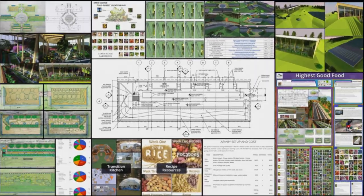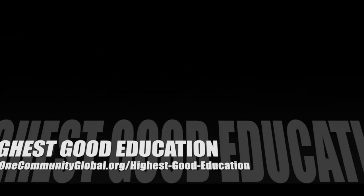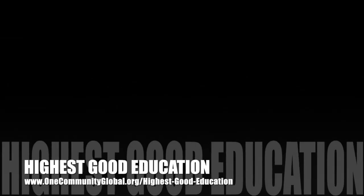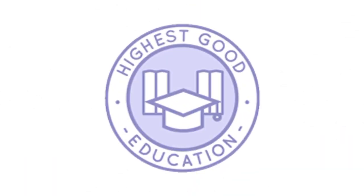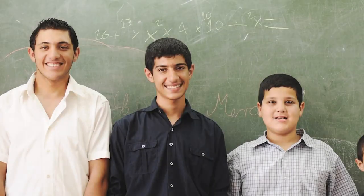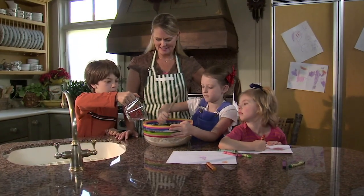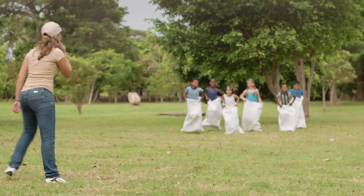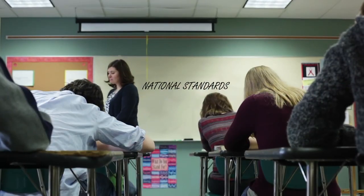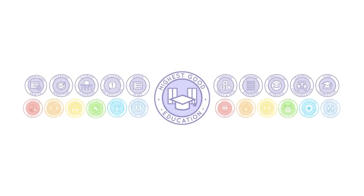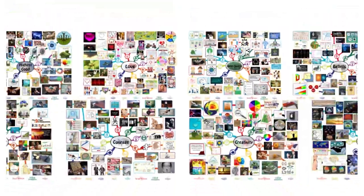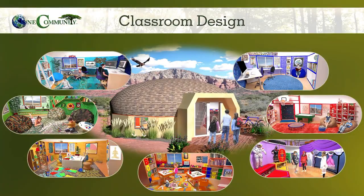The next component is highest good education. This component is complete and pretty much ready to launch once we're on the property. One Community's approach is designed for all age groups, adaptable to any schooling environment, inspiring and fun for all participants, and includes national standards, all subjects, lesson plans, teaching strategies, learning strategies and tools, classroom design, and more.